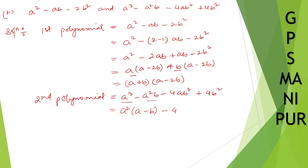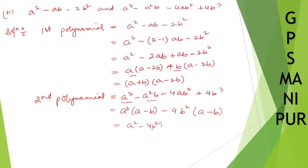Taking 4b square common from the last two terms — noting the last term is 4b cube — gives 4b square(a minus b). So I can write (a square minus 4b square)(a minus b), and a square minus 4b square factors as a difference of squares: (a plus 2b)(a minus 2b).